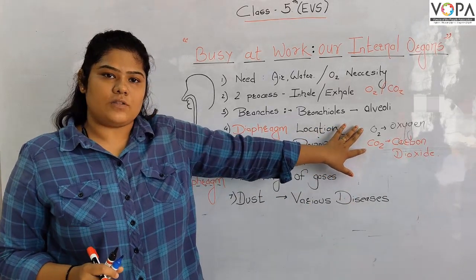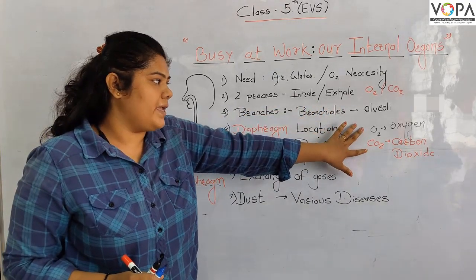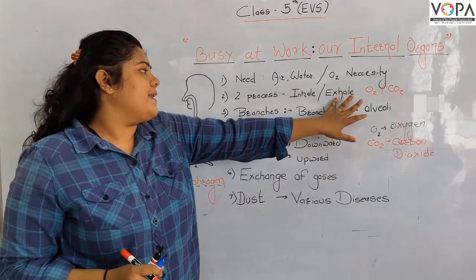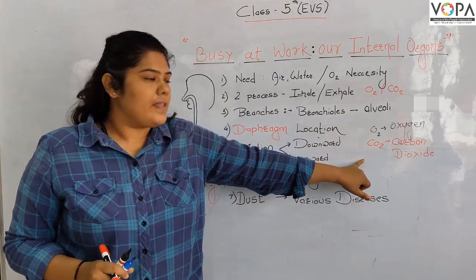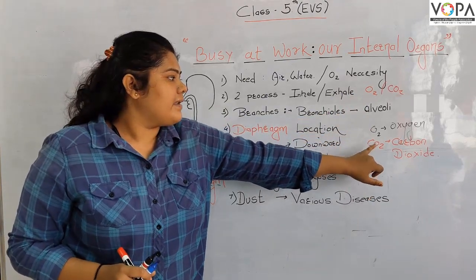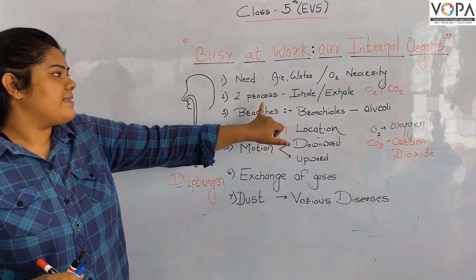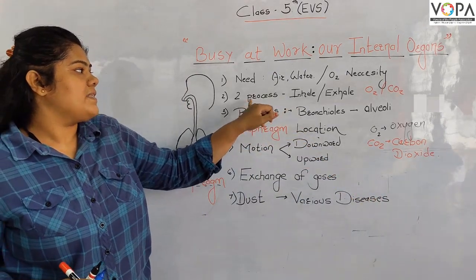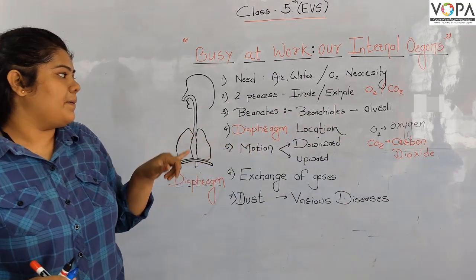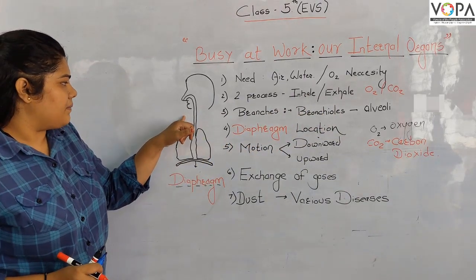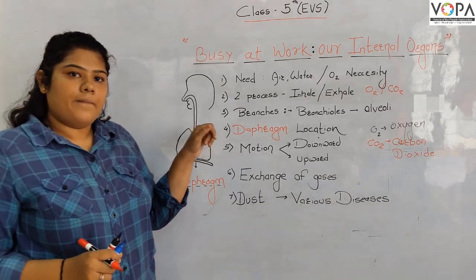And when we exhale, which gases are included? When we exhale, we only release carbon dioxide outside. So this is the two-process of respiration — inhale and exhale. After that, we looked at how air reaches our lungs through the respiratory system.